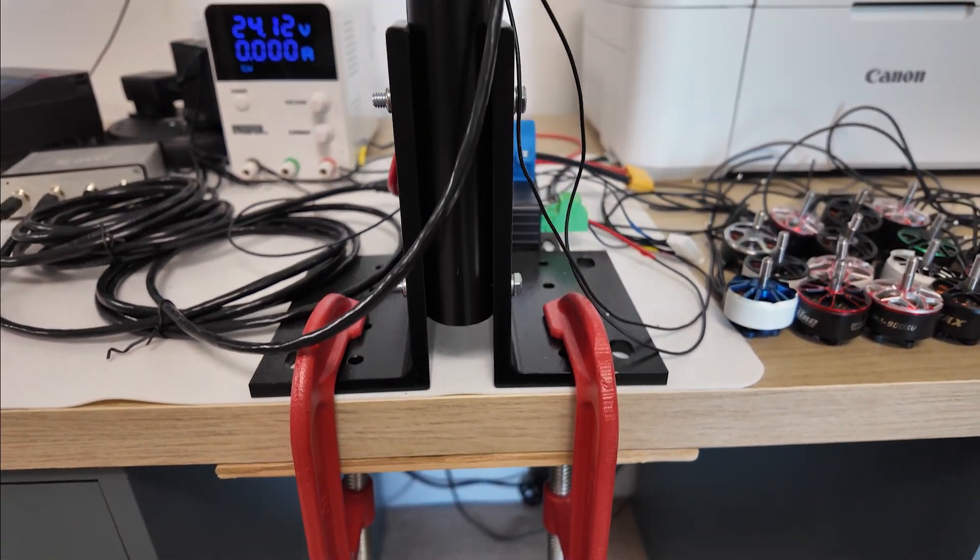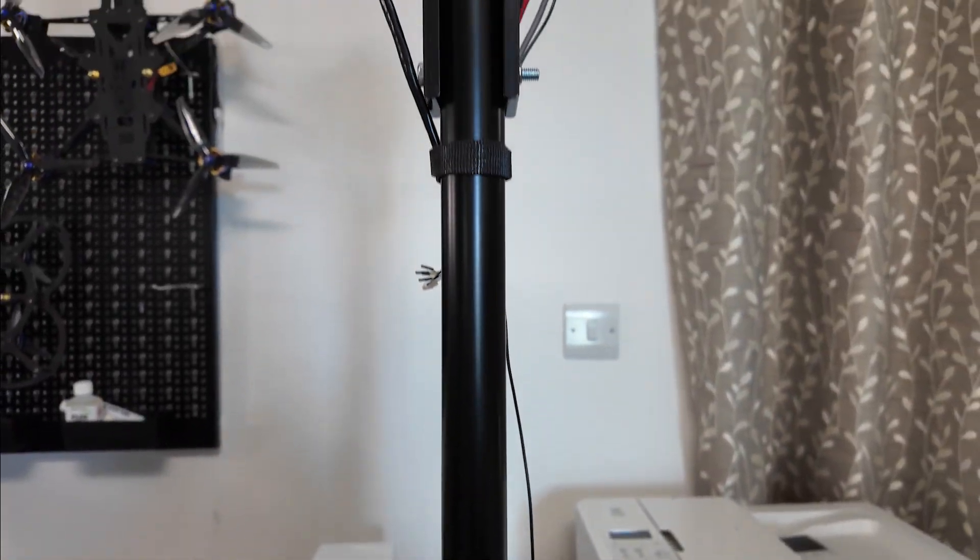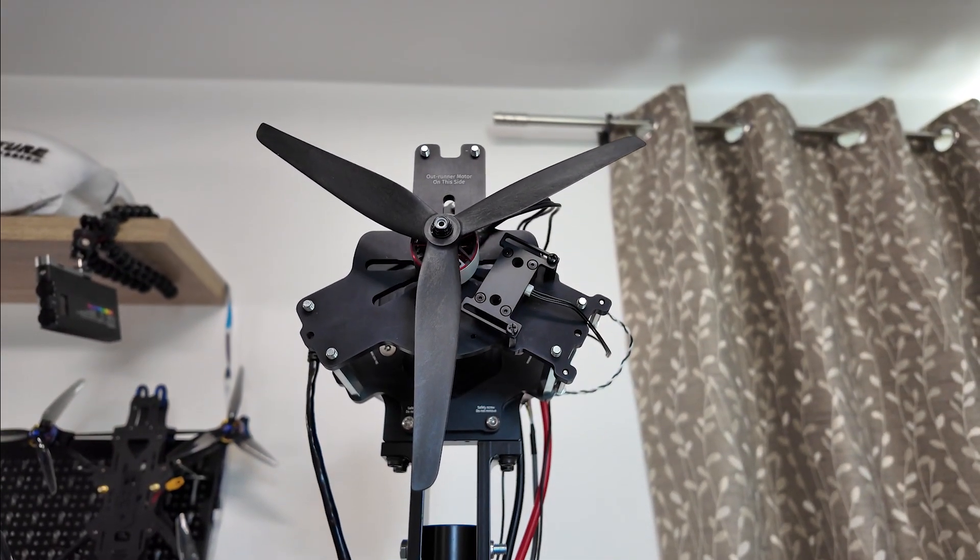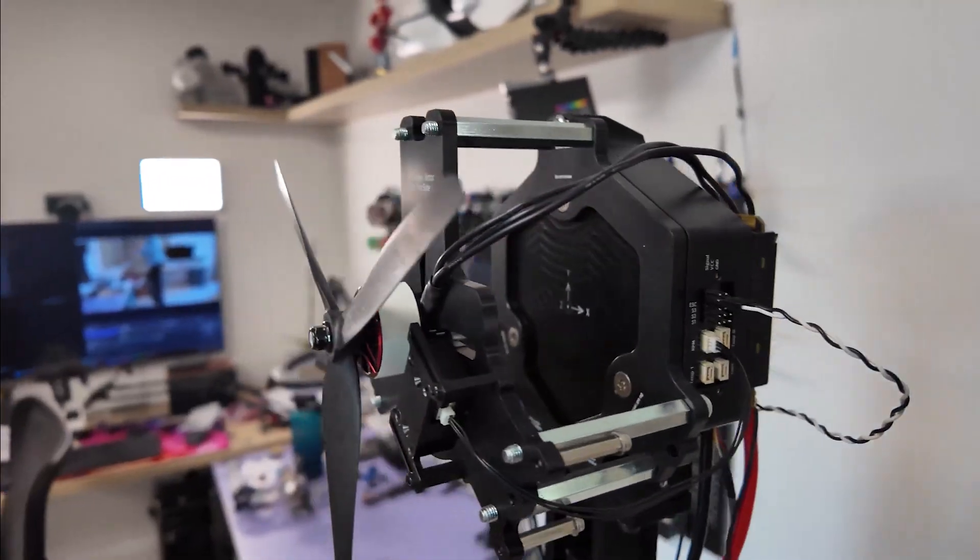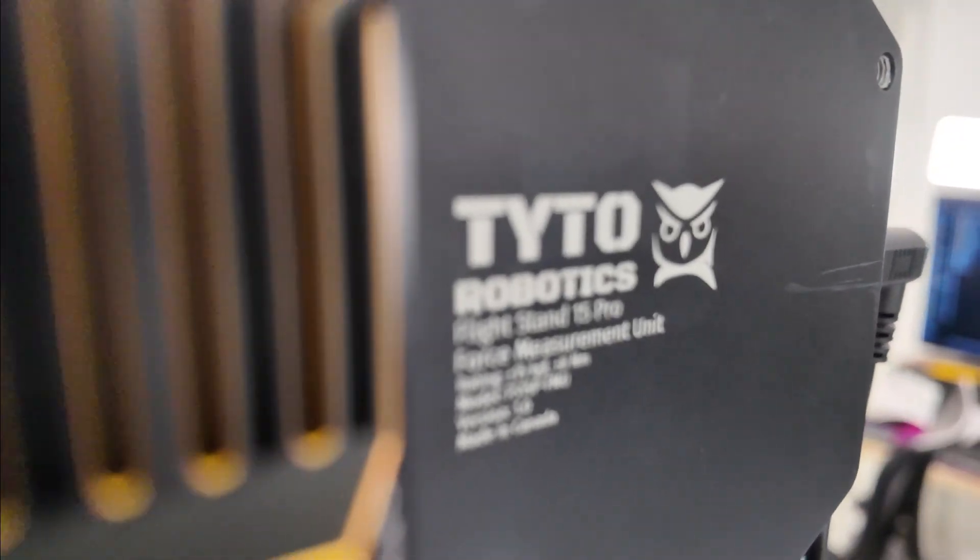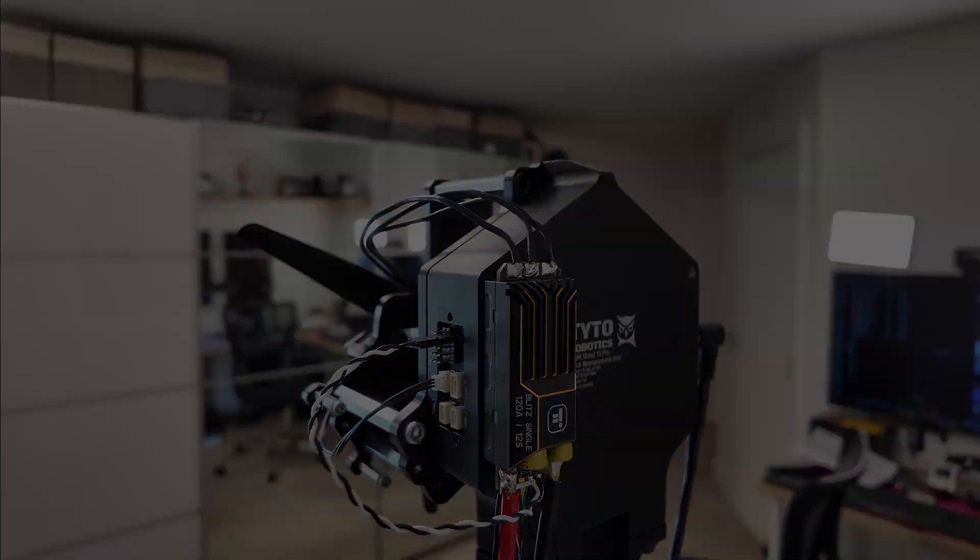But don't worry, because for today's testing we're going to be using my brand new Flight Stand 15 Pro from Taito Robotics. This is an absolute beast of a thrust test stand capable of measuring up to 180 volts, 150 amps of current, props up to 24 inches in diameter with maximum thrusts approaching 15 kilos, and it can do all of that at update rates of a thousand hertz, which is five times as fast as I could get out of my 1585.